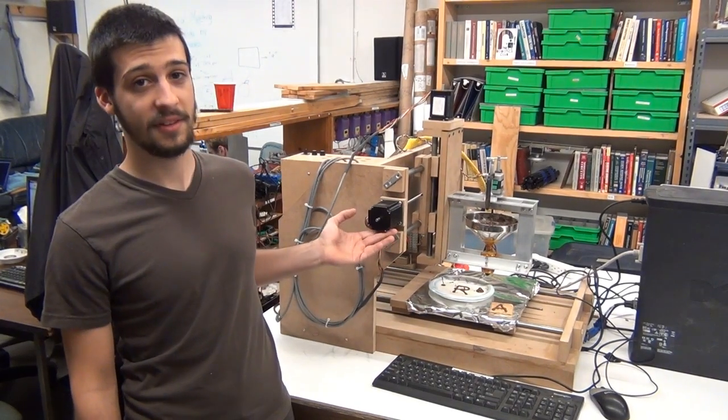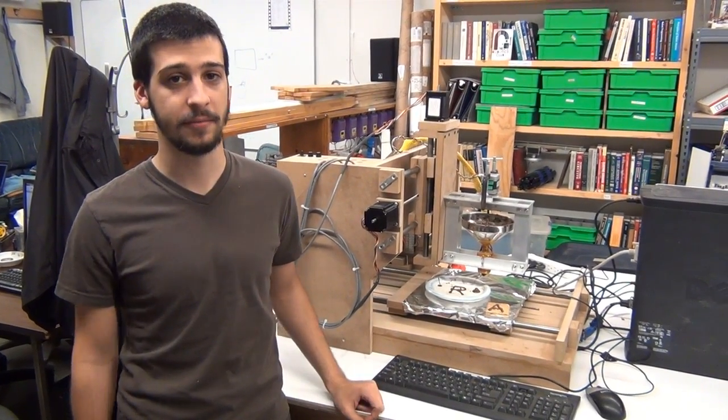The three axis gantry system consists of three high torque stepper motors that allows us to move the chocolate extrusion head in all three dimensions. The gantry is controlled by G-code, which is an industry standard, or by manual input via keyboard.